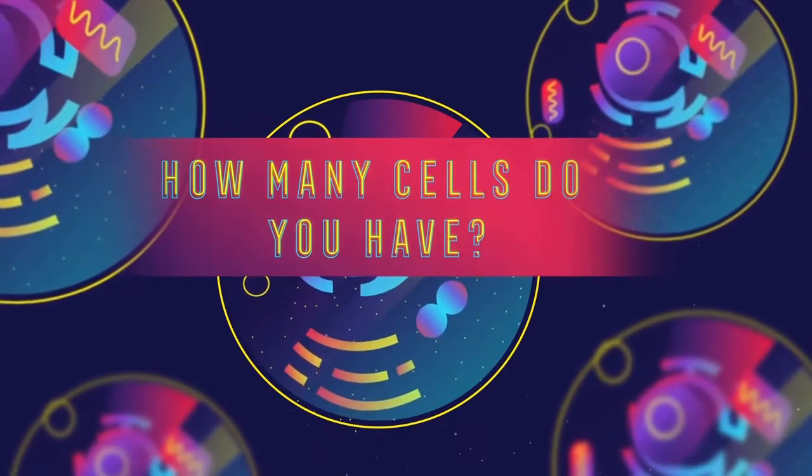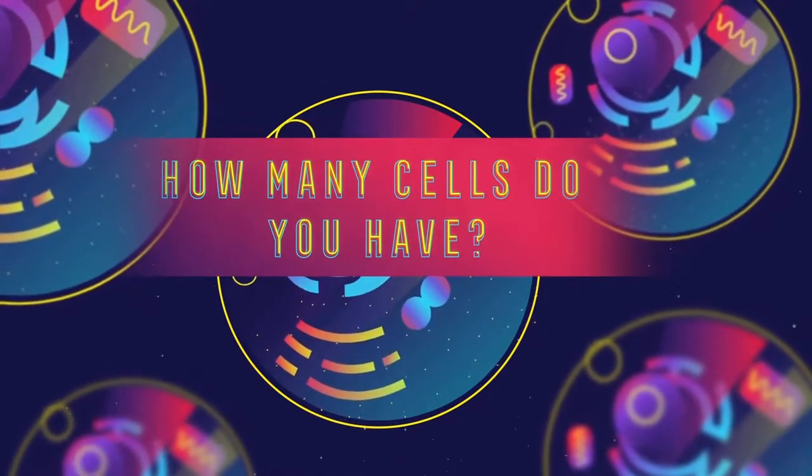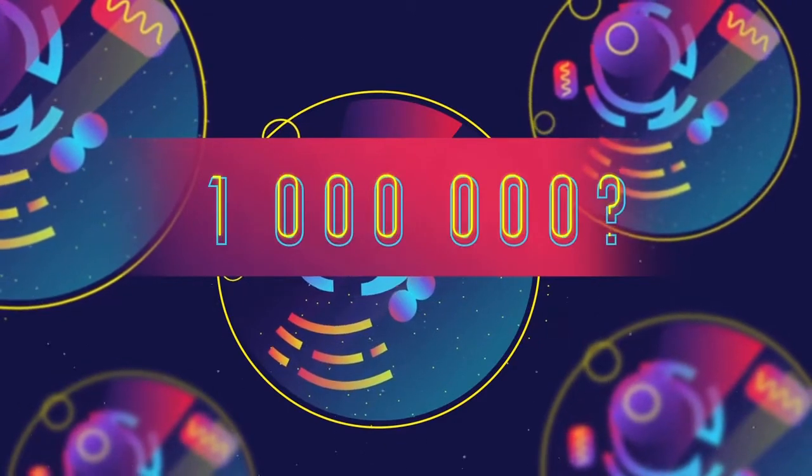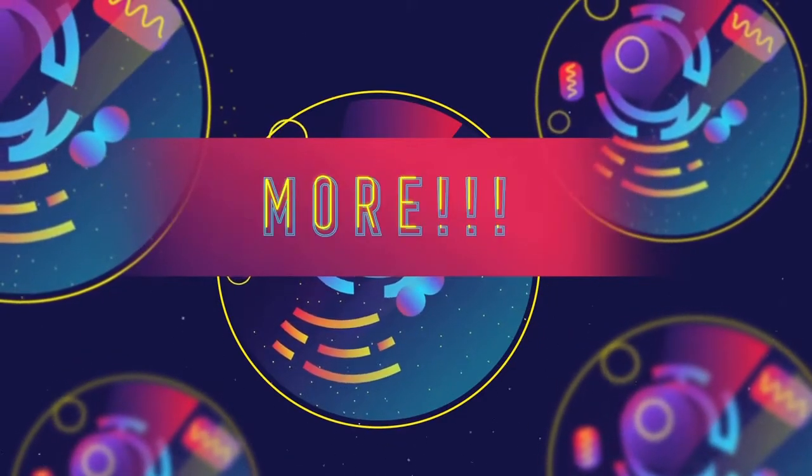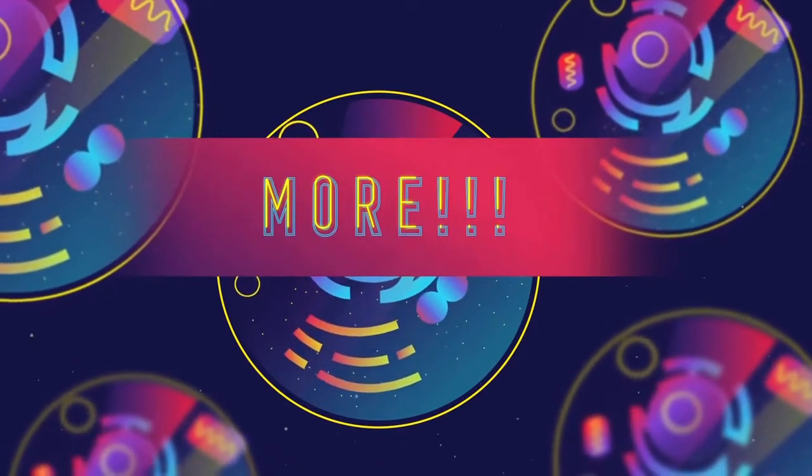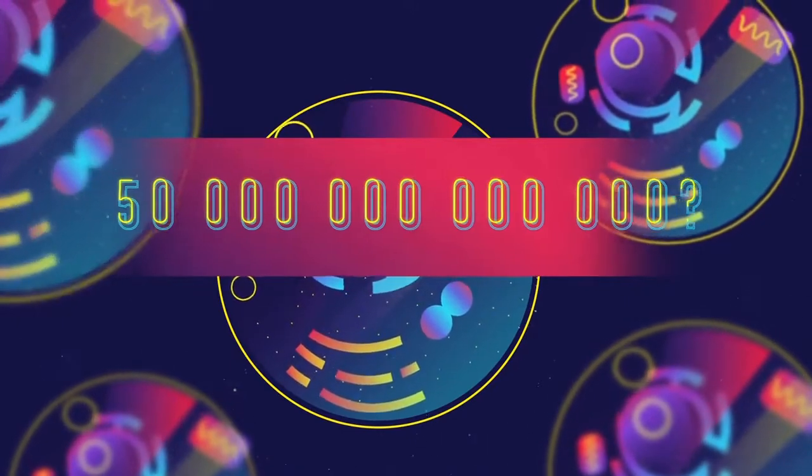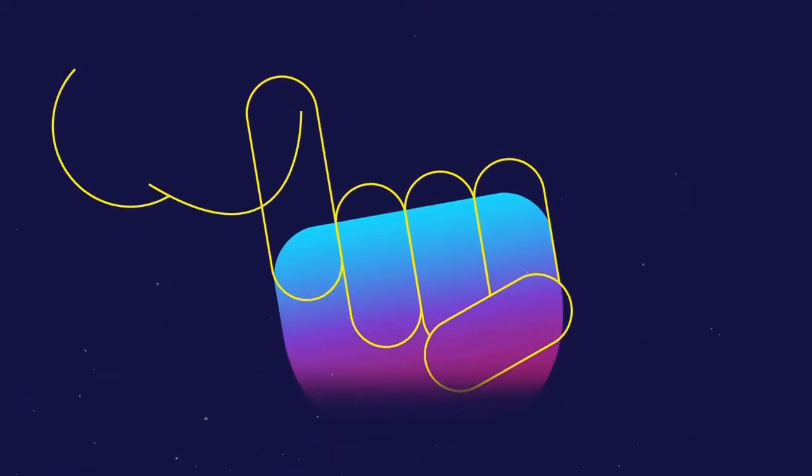So how many cells do you think you have in your body? A thousand? A million? A million million? More? We contain around 50 trillion cells. Have a look at your little finger. There's probably about 10 billion cells in there.